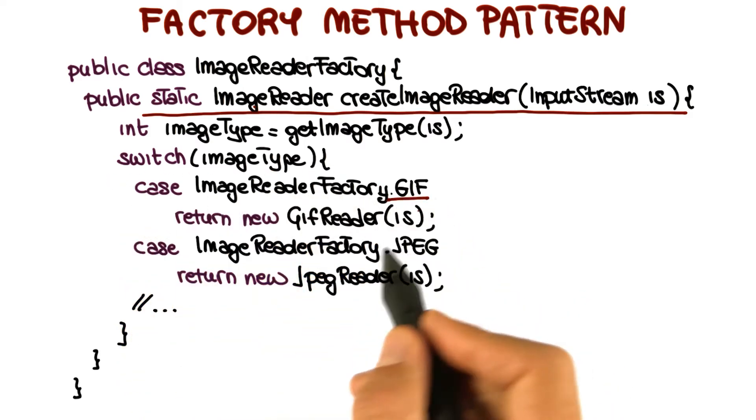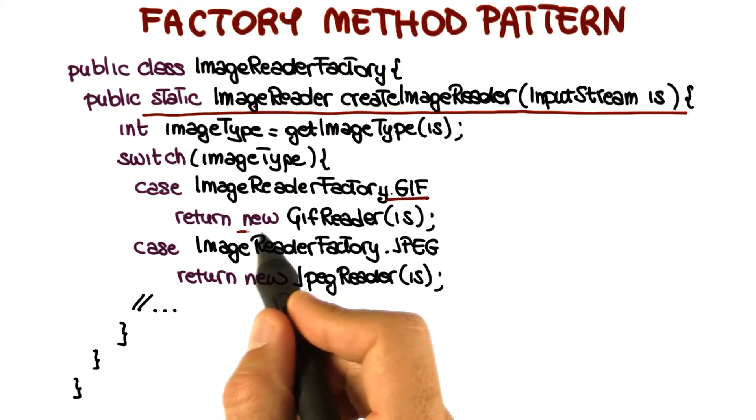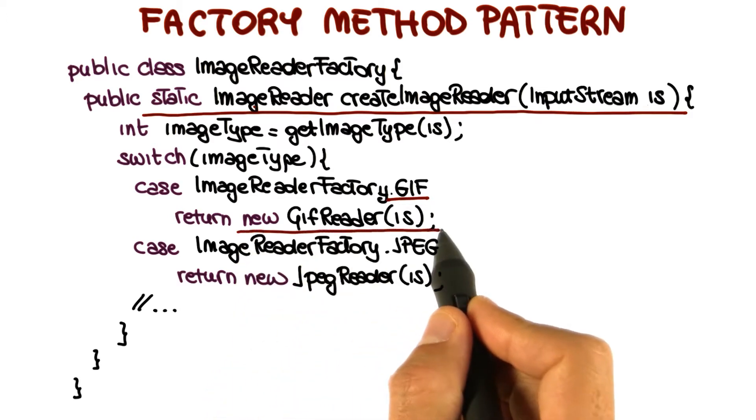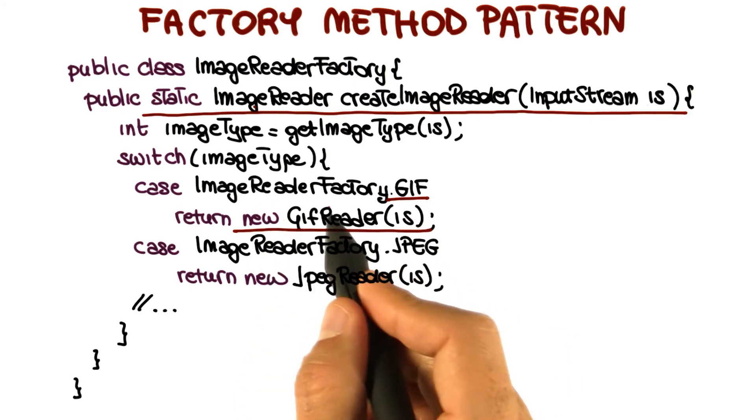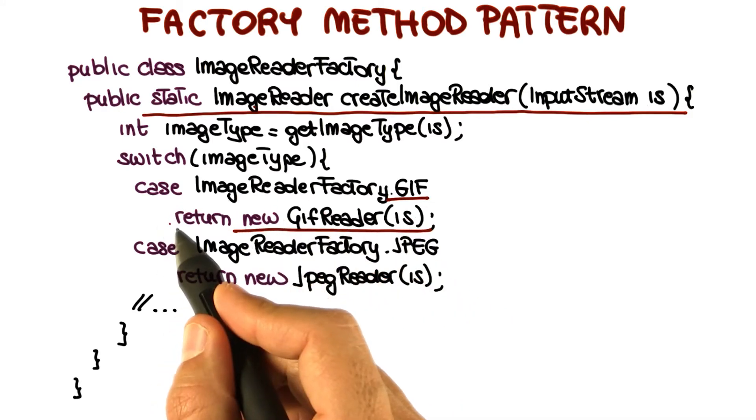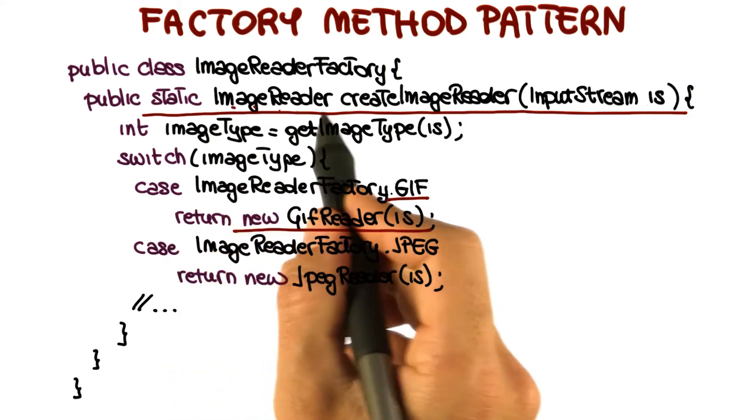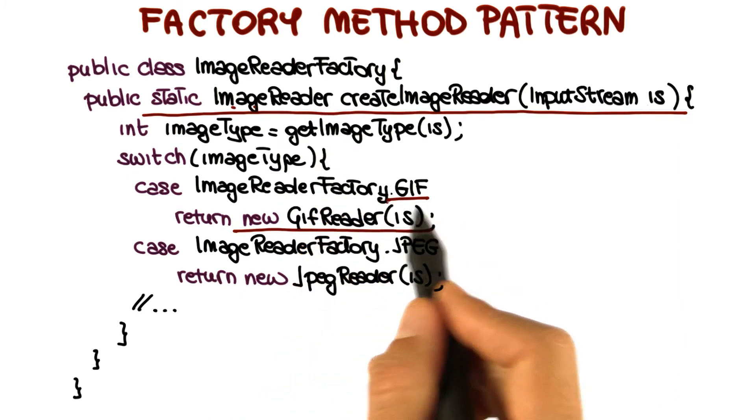If the imageType is GIF, it will invoke the constructor for GIFReader, passing the stream as a parameter. The GIFReader will read a GIF from the stream, create the corresponding object, and return it. So in this case, the imageReader object returned will be the object representing a GIF.